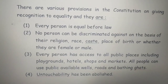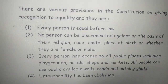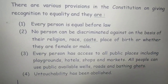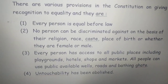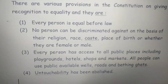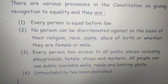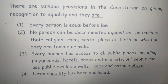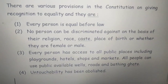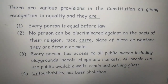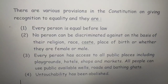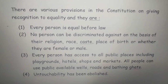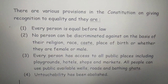The third provision is that every person has access to all public places, including playgrounds, hotels, shops, and markets. All people can use publicly available wells, roads, and bathing ghats — you cannot refuse somebody entry to a particular place. In previous years, we have heard about women not being allowed to enter temples, or lower classes being refused to drink from the same well as upper castes. We can therefore say that untouchability has been abolished.